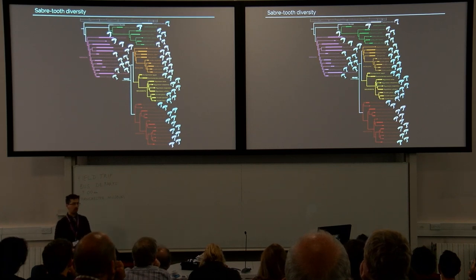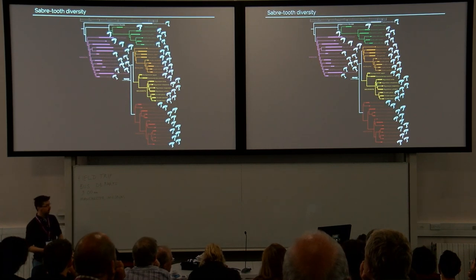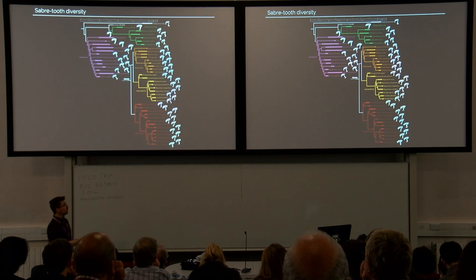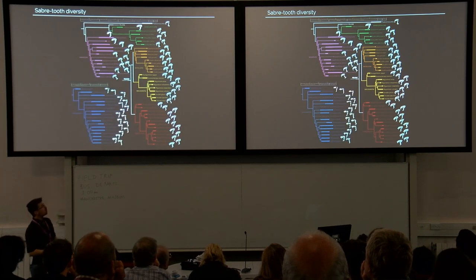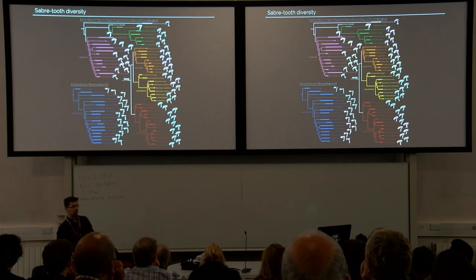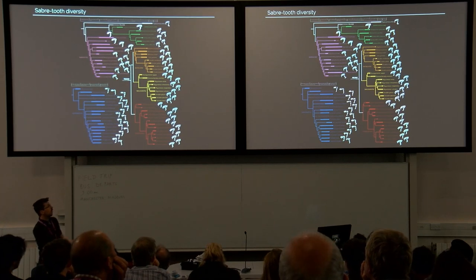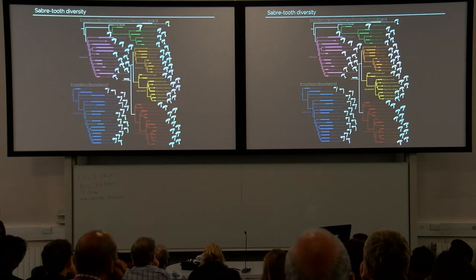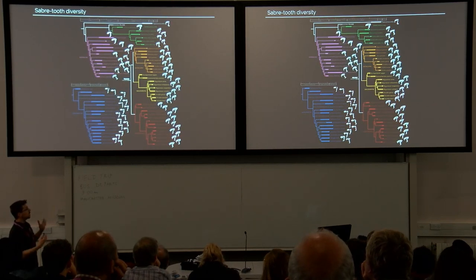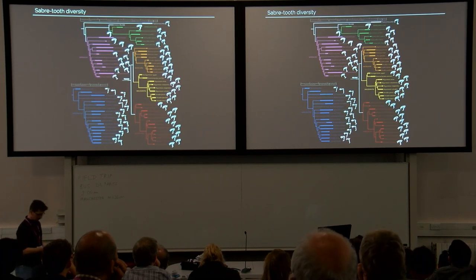With Thylacosmilus from South America, we have at least one prominent example. And if we move about 200 million years further back, we have another group of non-mammalian synapsids — the quite speciose and diverse group of Gorgonopsians. So we have at least six, probably seven large groups of saber-toothed vertebrates, making this a quite remarkable instance of convergent evolution.